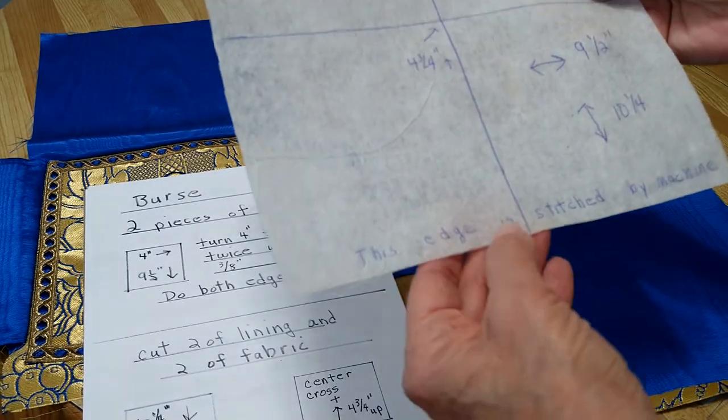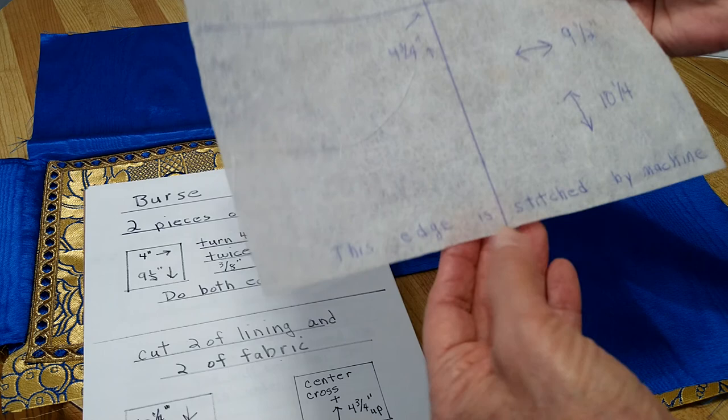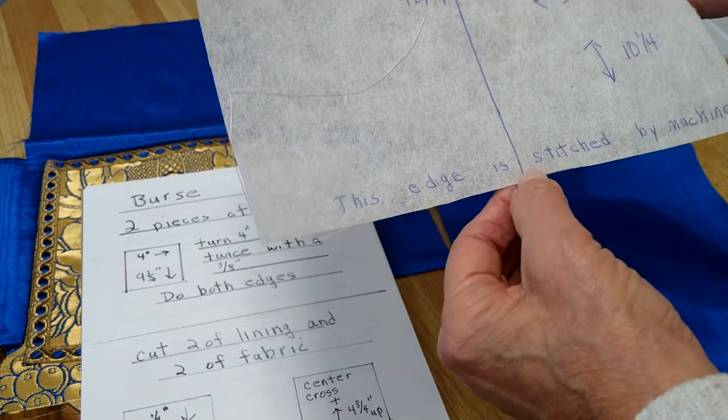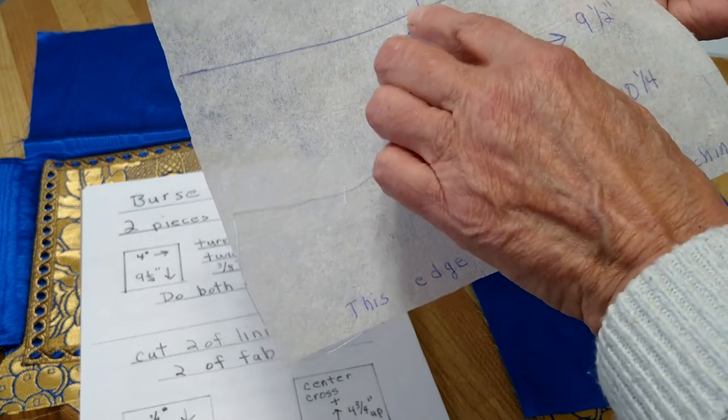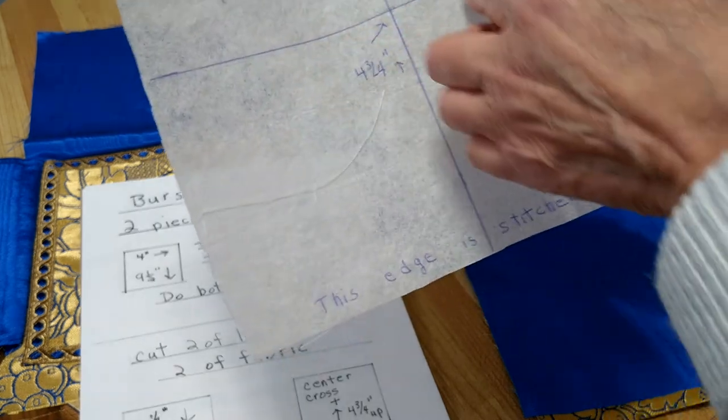This is what I do. I do it from the edge where it's stitched and I go four and three quarter inches and I put a mark here, and that's where I center my cross.